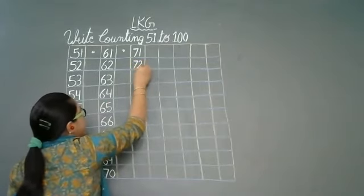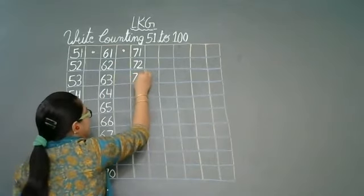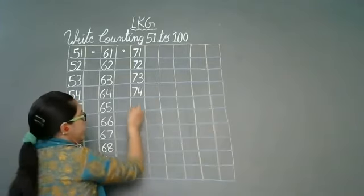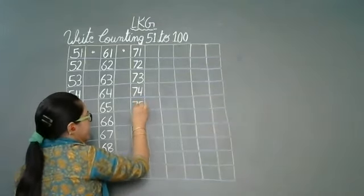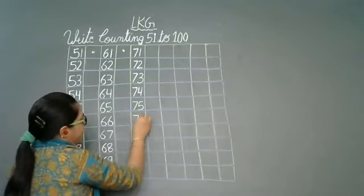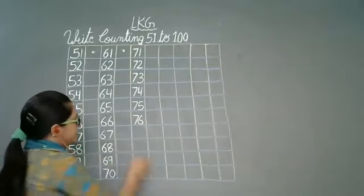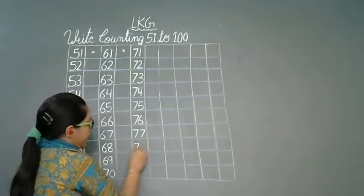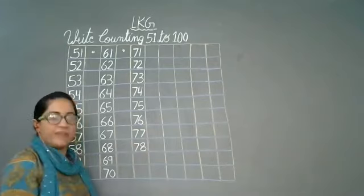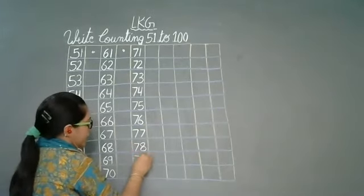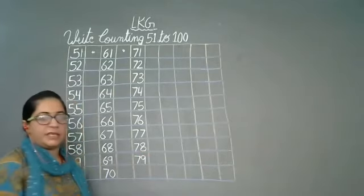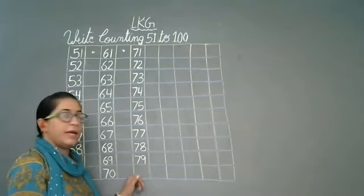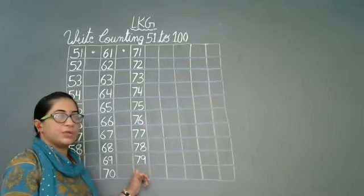7, 2, 72. 7, 3, 73. 7, 4, 74. Very good. 7, 5, 75. 7, 6, 76. 7, 7, 77. 7, 8, 78. 7, 9, 79. End me kya aeyega? 7 ke baad kya aata hai? 8. To hum yaan pei kya likhayenge? 8, 0, 80.